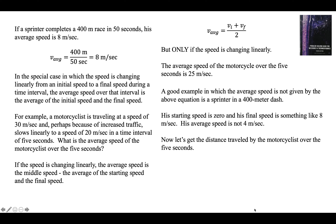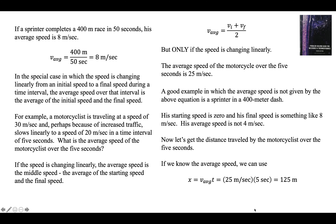Now let's get the distance traveled by the motorcycle over the 5 seconds. If we know the average speed, we can use the equation: distance equals average speed times time. The average is distance over time; rearranging gives distance equals rate times time. So 25 meters every second for 5 seconds is 125 meters. The distance the motorcycle travels over that deceleration is 125 meters.